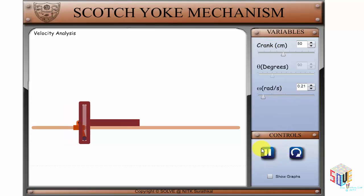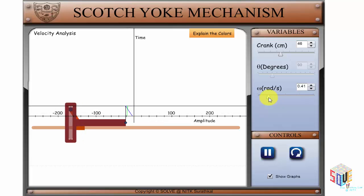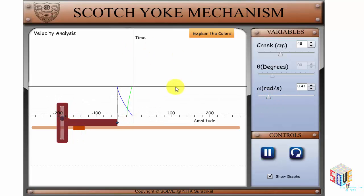Here, you have an option to see the graph that is plotted dynamically. For various lengths and angular velocities, the amplitude vs time graph can be seen plotted.